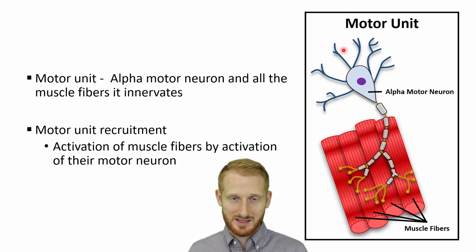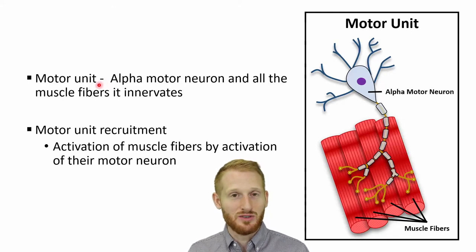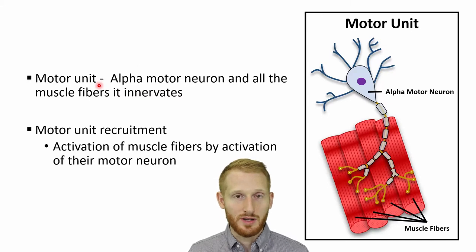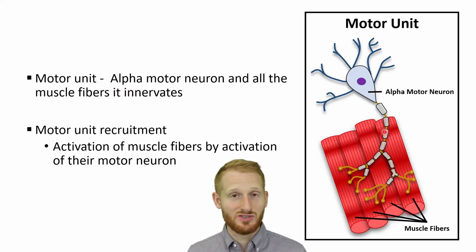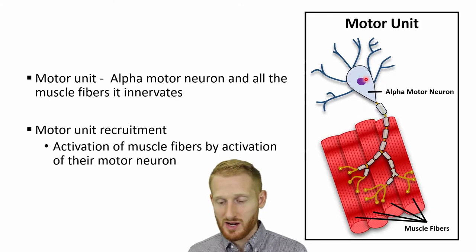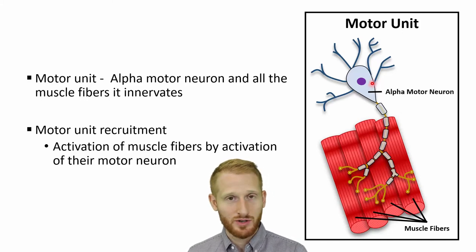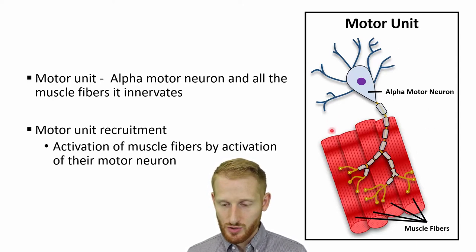Muscle cells contract together — you don't contract one muscle cell at a time. You contract bundles or collections of muscle cells. The functional contractile unit is the motor unit. The motor unit is the alpha motor neuron, which innervates the skeletal muscle causing it to contract, along with all of the muscle cells it innervates. If the alpha motor neuron fires an action potential that travels down the axon to the motor end plates touching the muscle cells, then all of those muscle cells contract together. If the alpha motor neuron fires, all the muscle cells it innervates also fire, and this unit is called a motor unit.